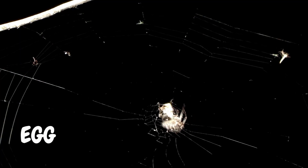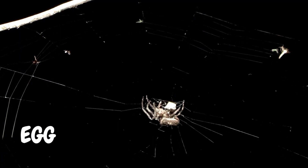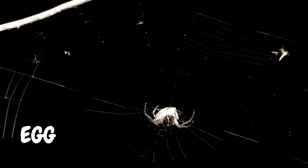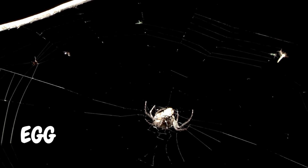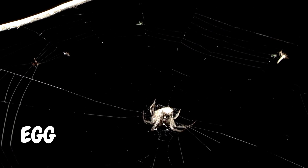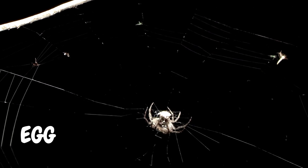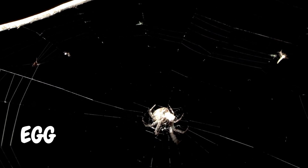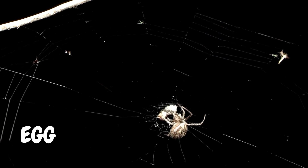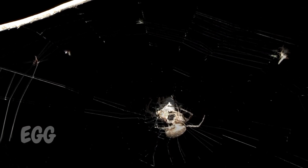First, a spider starts its life inside an egg. It is so small and round, on the ground or a tree is found. A spider starts its life inside an egg.